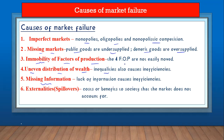Number six is missing information — when information is not available in the market, there cannot be productive or allocative efficiency, which causes market failure. The last cause is externalities, also called spillovers. Externalities can be costs or benefits to society that the market does not account for. Let's look at this with the aid of a graph.